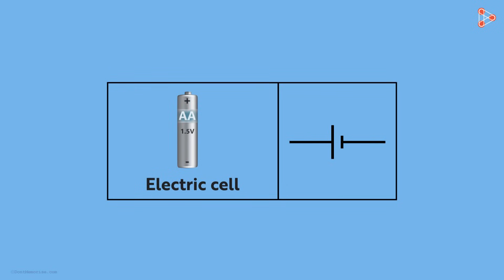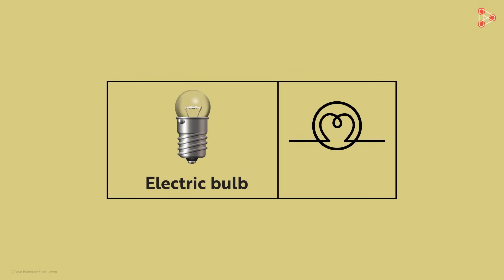This is a symbol representing a battery which is a 1.5 volt cell. This bigger line represents a positive terminal and the small one represents a negative terminal. This symbol is used for the bulb connected in the circuit. It is just W written upside down in this way and enclosed in a circle.